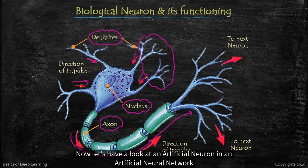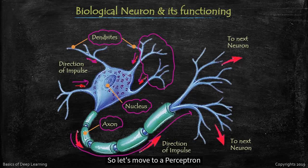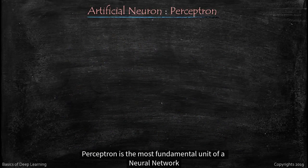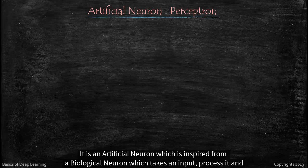Now let's have a look at an artificial neuron in an artificial neural network. So let's move to a perceptron. Perceptron is the most fundamental unit of a neural network. It is an artificial neuron which is inspired from a biological neuron.